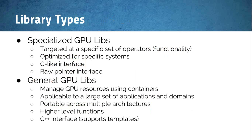In today's talk, I'm going to focus on what we think are the two main kinds of GPU libraries: the specialized GPU library and the general GPU library. The specialized GPU library covers a very specific set of operators and functions — they're not very broad, or they might be optimized for a very specific system, meaning they work great on one system but not so great for another. They have a C-like interface and a raw pointer interface.